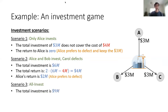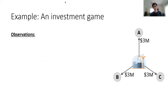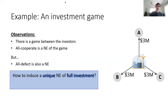In the third scenario, everyone invests. The total investment is $9 million, and this is going to be an efficient outcome. The total return is $9 million minus the cost times two, which gives $10 million, and here Alice has profits so she prefers to cooperate. Some basic observations: there is a game between these investors where 'all cooperate' is a Nash equilibrium, but 'all defect' is also a Nash equilibrium and it is not efficient. So we ask how to induce a unique equilibrium of full investment.